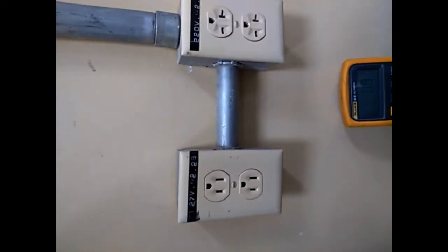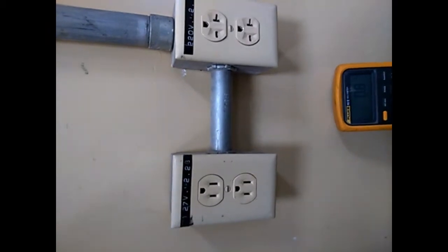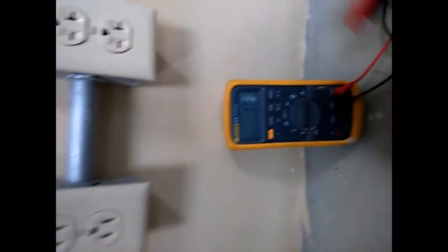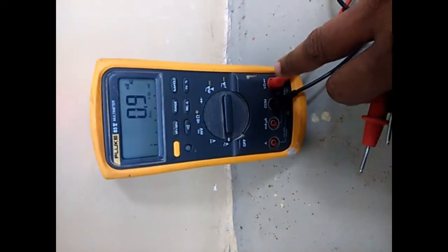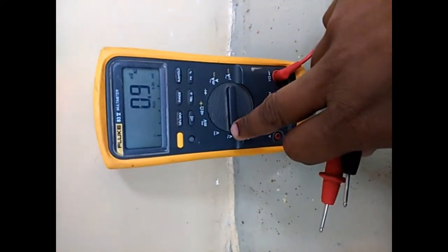Right now in front of me, I have two sockets: one is 220V and one is 120V. As I told before, we placed black in common and red in the voltage port, and we set the switch to the AC voltage section. Now we will measure the voltage.